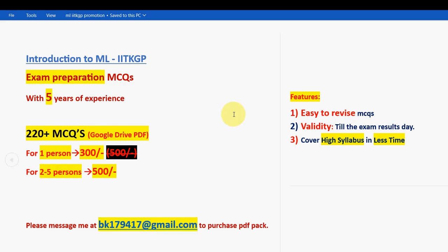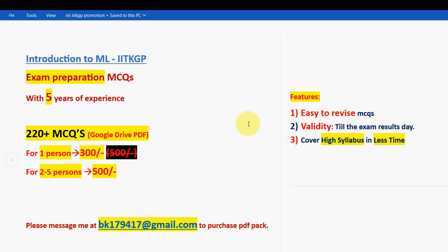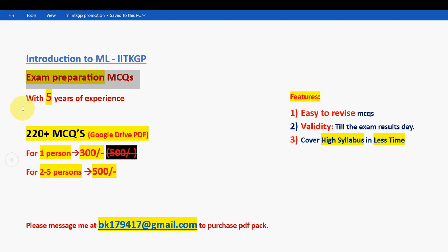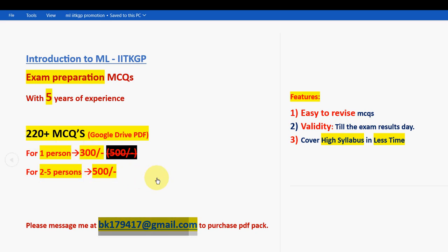The email ID bk179470 at gmail.com is also given in the description box. The features of this PDF: it is easy to revise MCQs, validity is till the exam results publishing day, and it covers a high amount of syllabus within less time. Time is very less — mostly two to three days are left, so take it now. Exam preparation MCQs, 220+ questions — 300 rupees for one person, 500 rupees for two to five persons. Wish you all the best for your final exam. Goodbye!